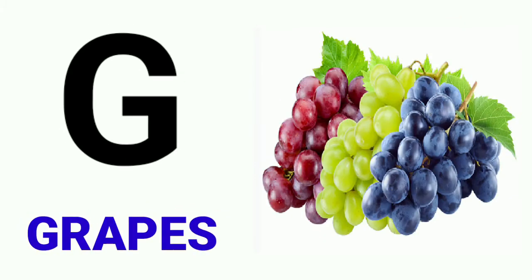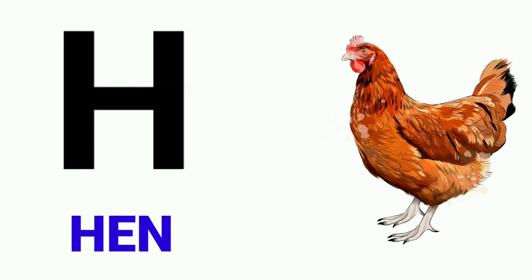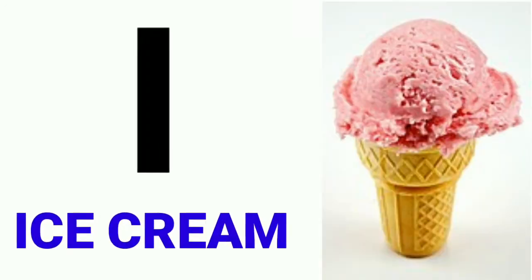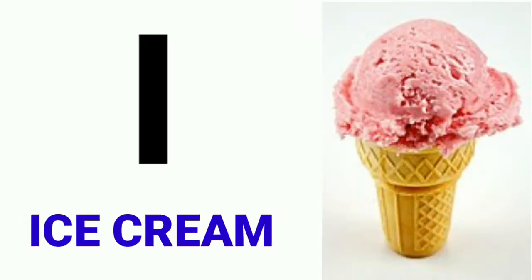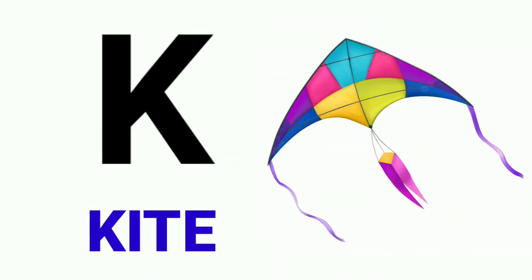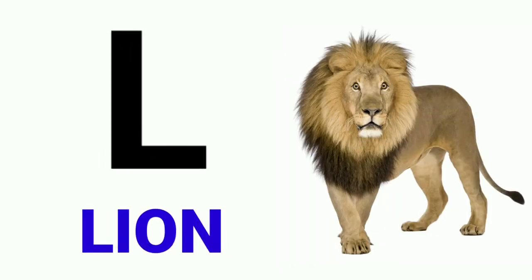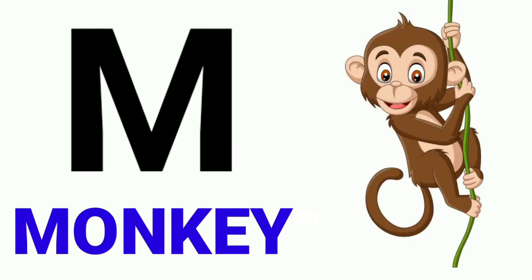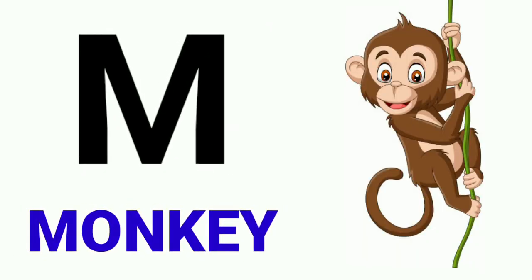G for crabs, H for hen, I for ice cream, J for jug, K for kite, L for loin.